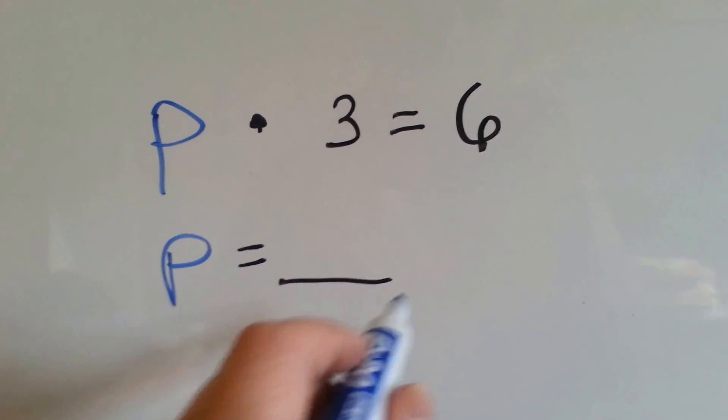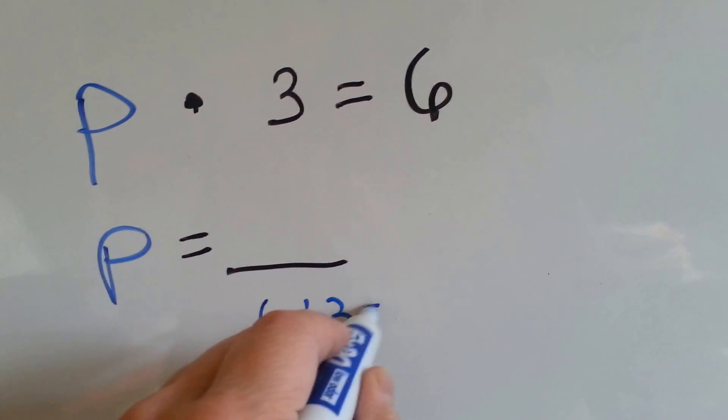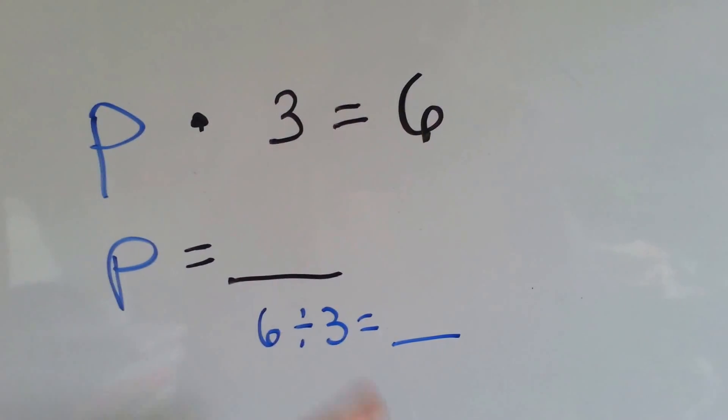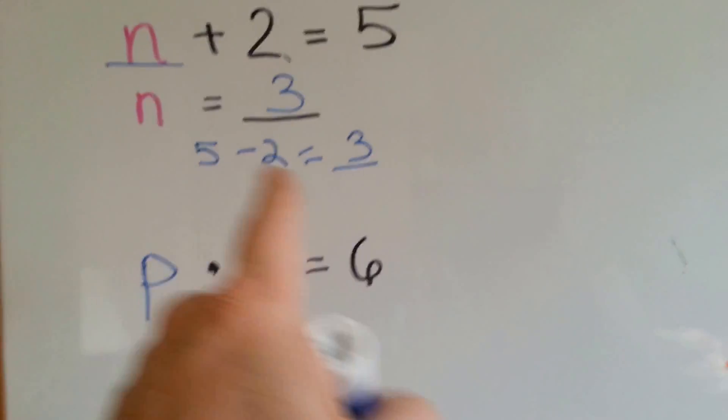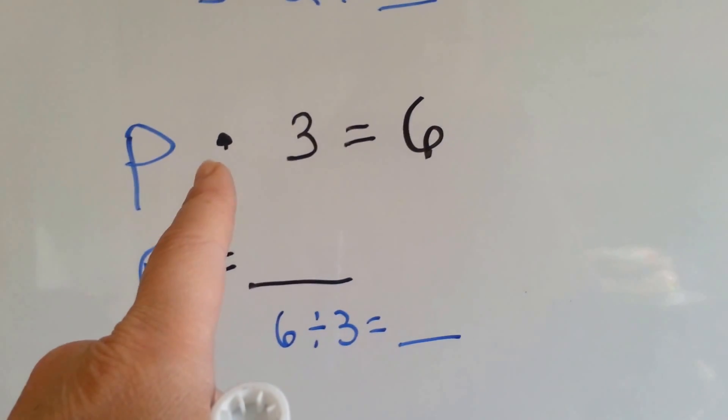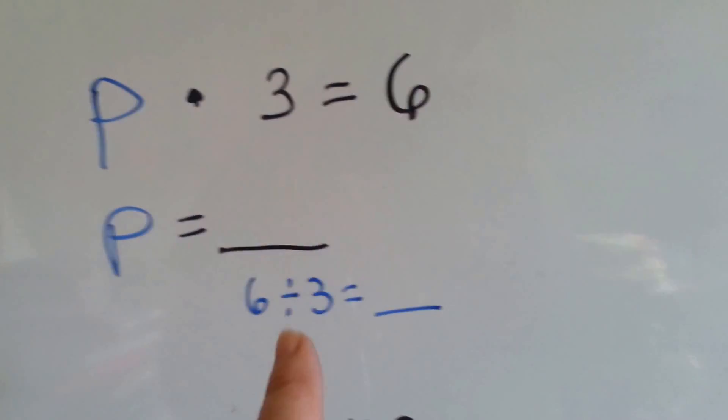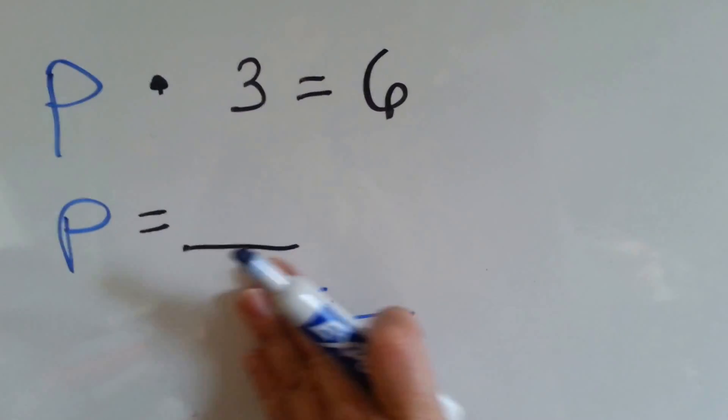Well, you can actually do division. You can say 6 divided by 3 equals something. Because just like subtraction is the opposite of addition, division is the opposite of multiplication. Now, I know we haven't really gotten into division yet, so I don't want you to worry about this so much right now.